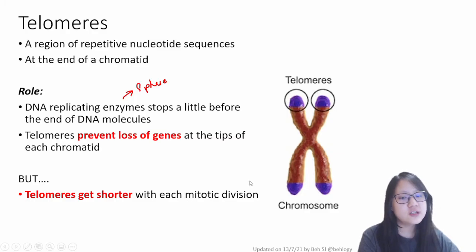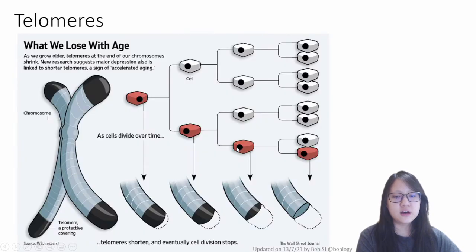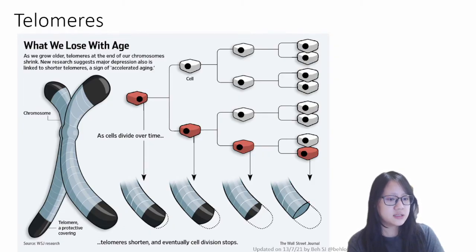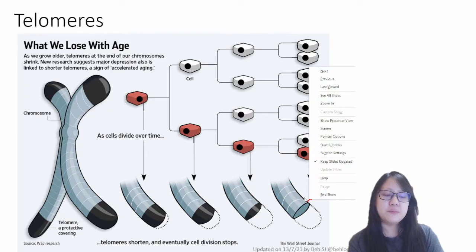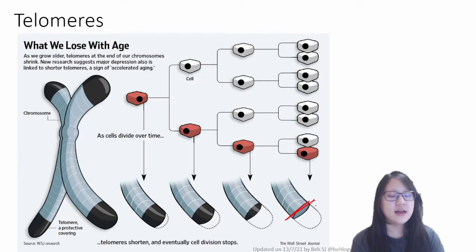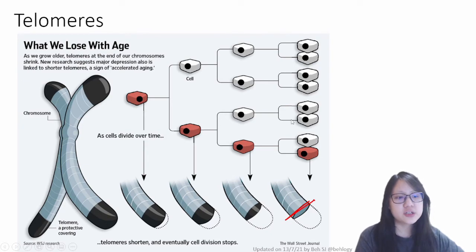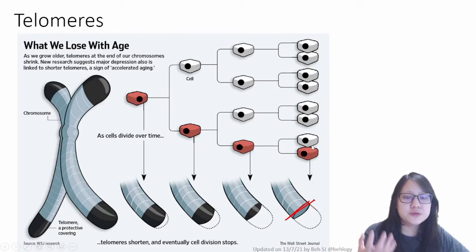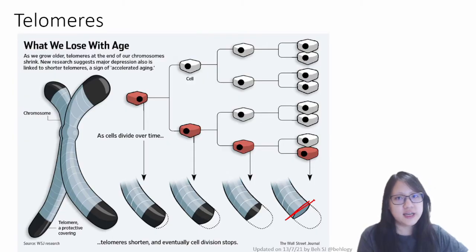Telomeres get shorter with each mitotic division. Eventually there will be no more telomeres — it gets shorter and shorter each cell division. Eventually, since no more telomeres are available, the end of the chromosome with an important gene might be harmed during cell division and the cell would die. The cell will not be able to function, or the cell would detect that problem and kill itself — it causes itself to die so that it won't pass on faulty DNA to its daughter cells. So it's a mechanism.